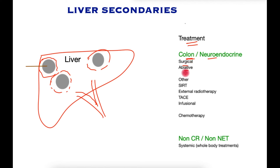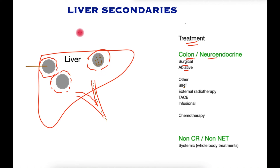When surgery and ablation are not possible, there are several other options such as internal radiotherapy, where radioactive-bearing molecules are directed towards the metastases, becoming resident within the cancer cells and destroying them with radiotherapy. Radiotherapy can also be directed from the outside, thus destroying the cancer.